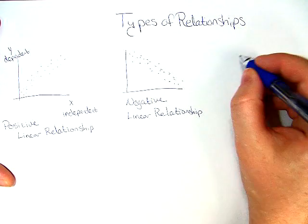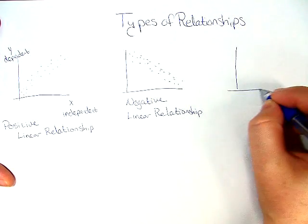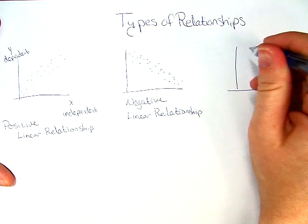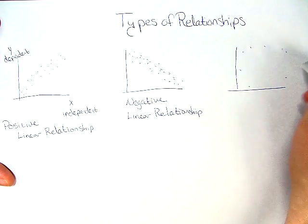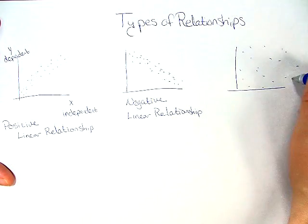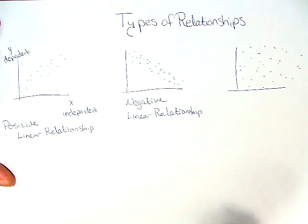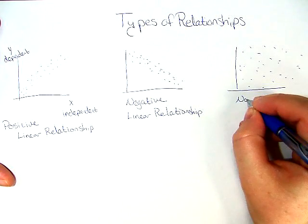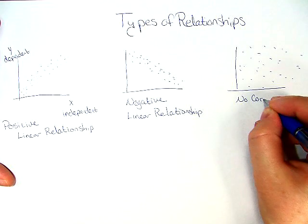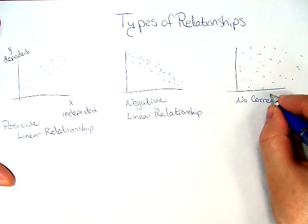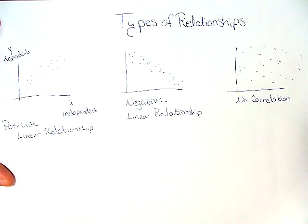The first type looks like this and has dots scattered about everywhere. This is very easy. This is no correlation. There is not a definite pattern. There is not a definite tendency. It's just out there.